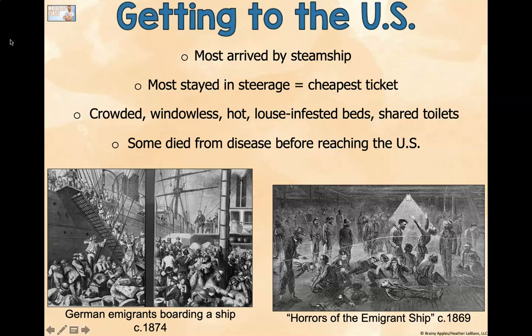In steerage, it was crowded, windowless, hot, and lice-infested beds, and these people shared toilets. A lot of people died from disease before they even got to the United States. If they died, people would just throw them overboard. These are German immigrants boarding a ship in 1874, and this is a picture titled 'Horrors of the Immigrant Ship' in 1869, showing the horrible conditions of the steerage area.